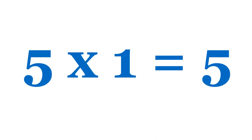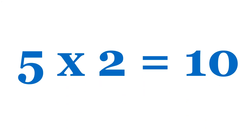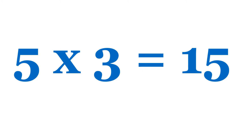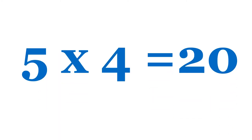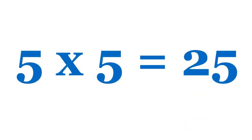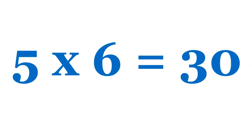Five ones are five. Five twos are ten. Five threes are fifteen. Five fours are twenty. Five fives are twenty-five. Five sixes are thirty.